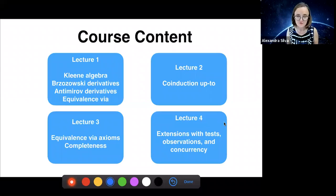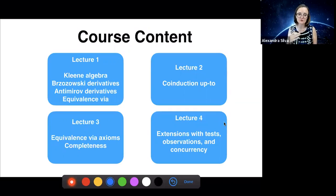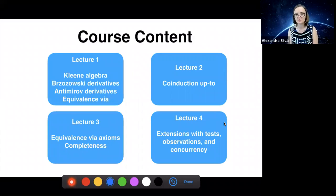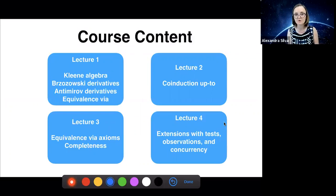My iPad has changed the formatting of my slides, so hopefully it's just this first slide that has a problem. In the second lecture, I want to show you a technique called co-induction up to, which is relatively recent and is a more efficient way of checking equivalence in automata and also in expressions. In the third lecture, I'll talk about equivalence via the axioms and show how to prove completeness of Kleene algebra axioms. The last lecture will be an overview of extensions of Kleene algebra with different structures and how you can use that in program verification.